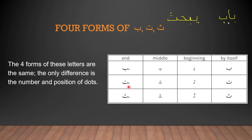The ending version of Ta is again similar to the original form, and the extension we see is because of the letter before it. Now Sa has three dots on top — that's the only difference. Sa also has three dots on top in its beginning form, middle form, and end form.